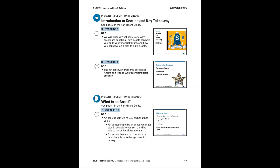You're going to introduce the section and key takeaway on slides three and four. Starting with slide three, you're going to discuss what assets are, why assets are beneficial, how assets can help participants build a financial future, and how they can develop a plan to build assets. Slide four covers the key takeaway: assets can lead to wealth and financial security. Showing slide five, you'll use the prompts to define the three types of assets — physical, financial, and productive — with all of that content on pages 12 and 13 of the instructor guide.